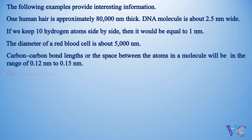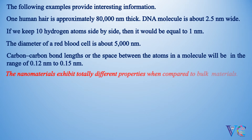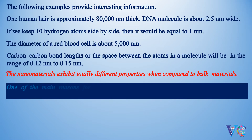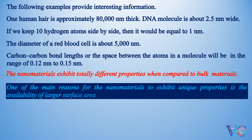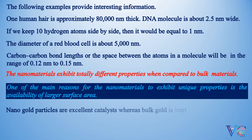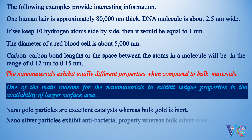Nanomaterials exhibit totally different properties when compared to bulk materials. One of the main reasons is the availability of a larger surface area. Nanogold particles are excellent catalysts, whereas bulk gold is inert. Nanosilver particles exhibit antibacterial properties, whereas bulk silver does not.